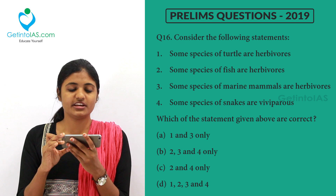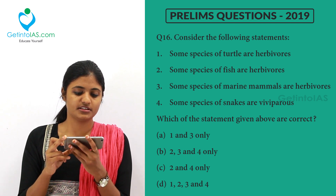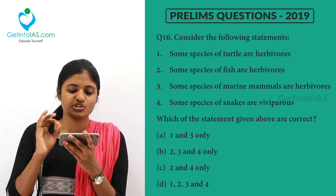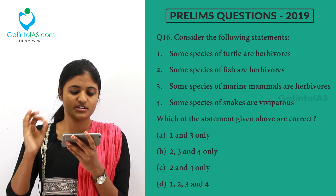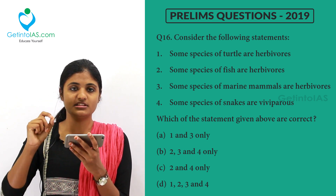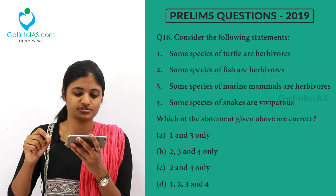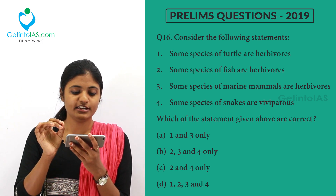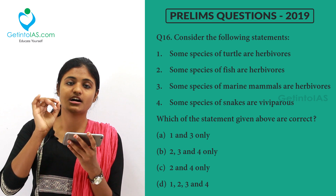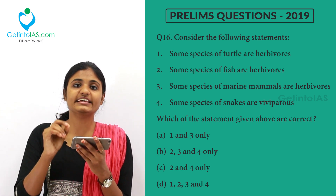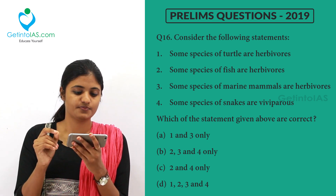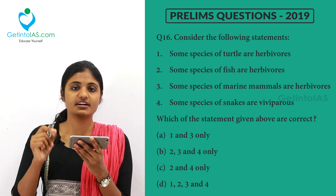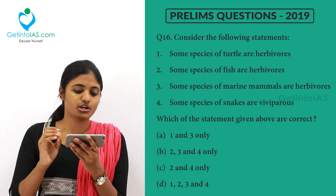Next question — consider the following statements. Some species of turtles are herbivores. Some species of fish are herbivores. Some species of marine mammals are herbivores. Some species of snakes are viviparous. Definitely some species of turtles are herbivores — the green sea turtle is herbivorous. Some species of fish are herbivores — that is also true.